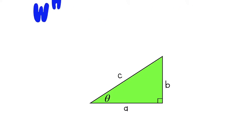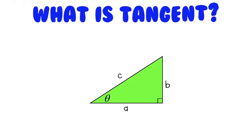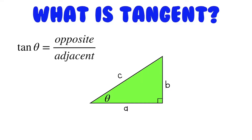And what about tangent? The tangent of an angle in a right triangle is the opposite leg divided by the adjacent leg. We have our theta here — b is the leg opposite of theta, and a is the adjacent leg because it touches theta. So our tangent of theta is equal to b divided by a.